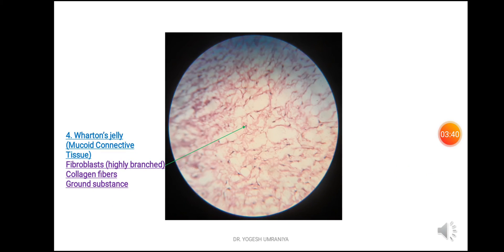In this microscopic field you can have a closer look at Wharton's jelly, or the mucoid connective tissue found within the umbilical cord. The green arrow is pointed at the highly branched fibroblast cells. Apart from the fibroblasts, you can also see the collagen fibres as well as the ground substance.